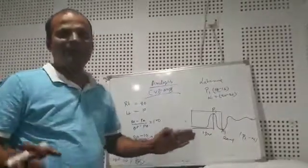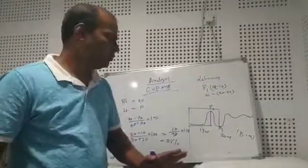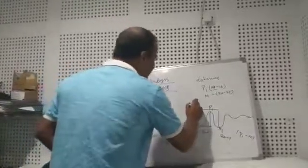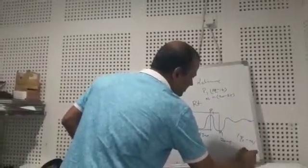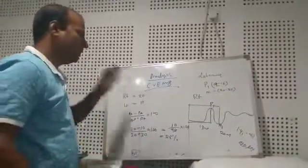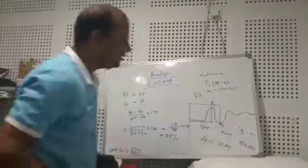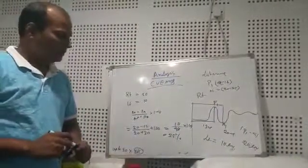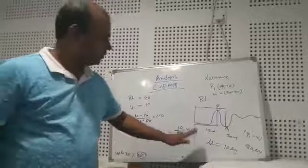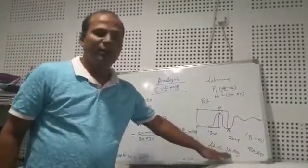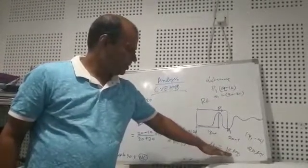And for example left ear I am getting 10 microvolts. Now we have to understand, see automatically you were able to understand the left ear amplitude is lower. Now how to understand if you have the instrument manual, you can establish the normal data.